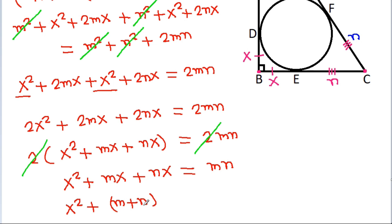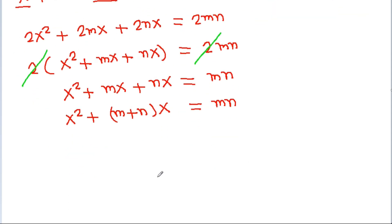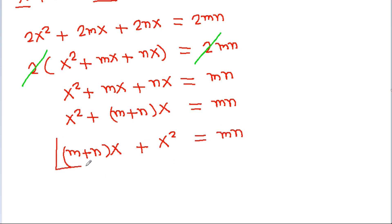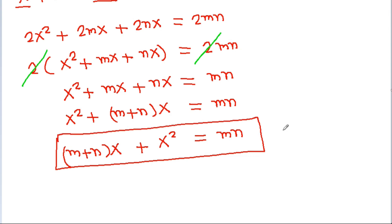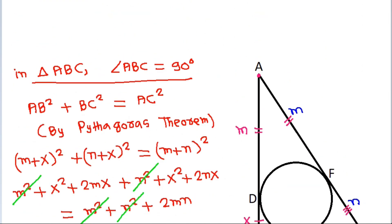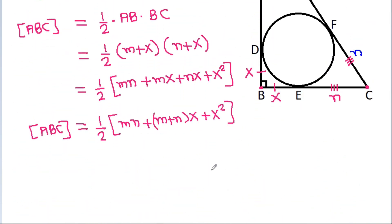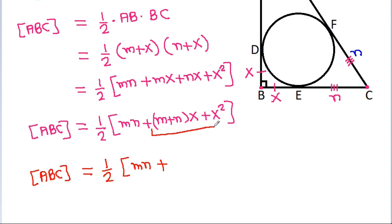So X² + (M+N)·X = MN. Substituting back into the area formula: area of ABC = one-half times (MN + (M+N)·X + X²). Since X² + (M+N)·X = MN, this becomes one-half times (MN + MN) = MN. Therefore, area of ABC = M times N.